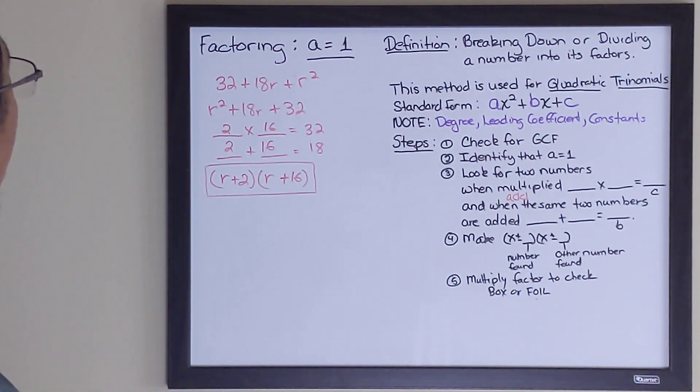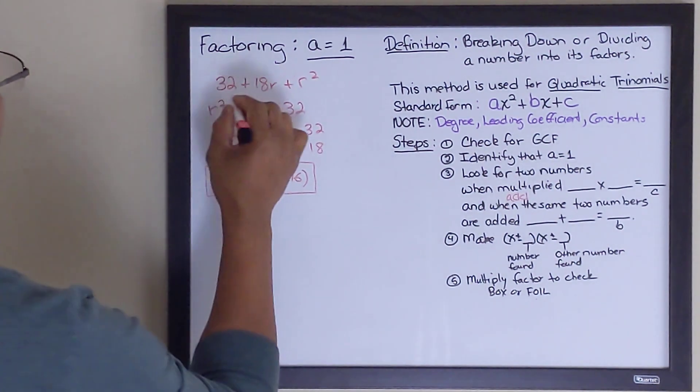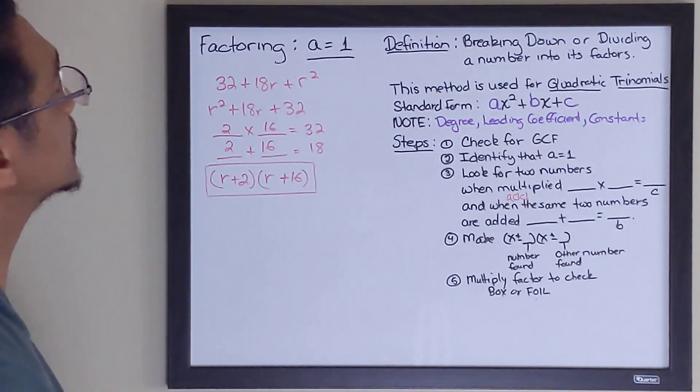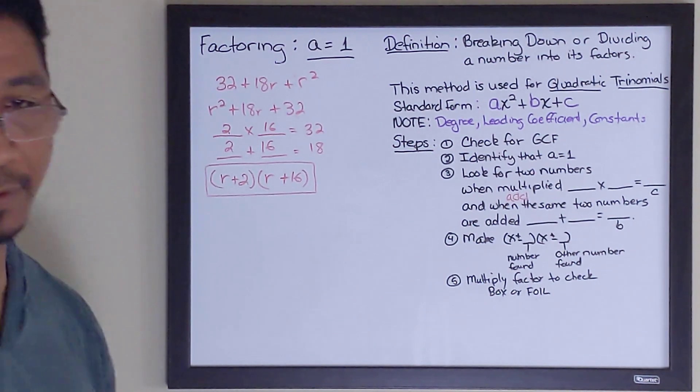This is our answer. That is the factored form of 32 plus 18r plus r squared. If you have any questions about this, go ahead and rewind and pause where you need to see where you got lost. Thank you.